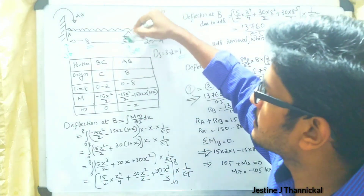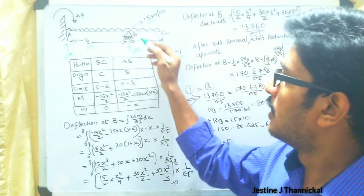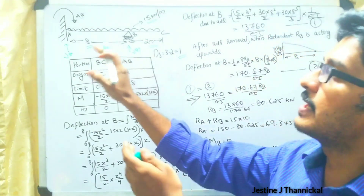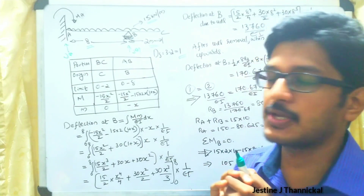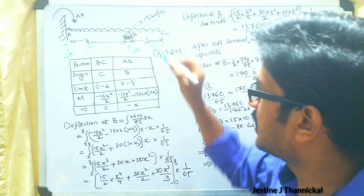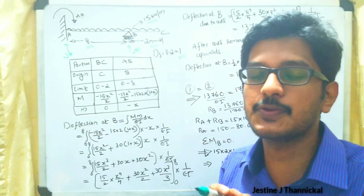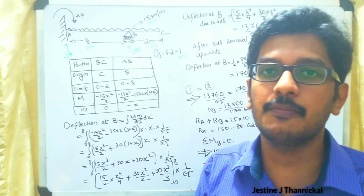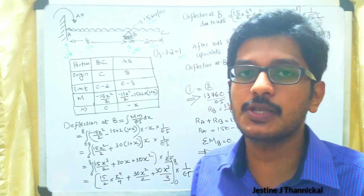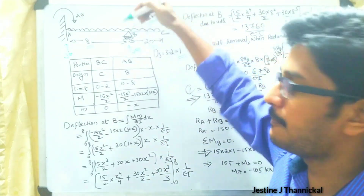We consider the roller support as our redundant member, so we will get a cantilever beam with a UDL acting over it. Now we have to analyze the deflection that occurs at point B. We can analyze this deflection using either the moment area method, conjugate beam method, or unit load method. Here we are using the unit load method.